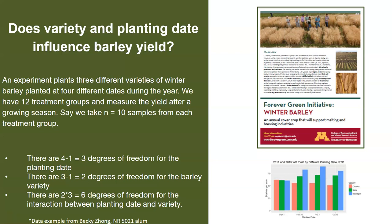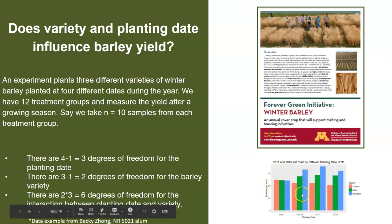Here we have twelve different treatment groups, and we measure the yield after a growing season. We might take ten samples from each group. For the degrees of freedom, we take away one from each level. So we have four minus one, or three, degrees of freedom for the planting date, and three minus one, or two, degrees of freedom for the barley variety. In the graph, we're looking at the yield of barley in bushels per acre at four different planting dates, grouped from September 1st to October 15th.